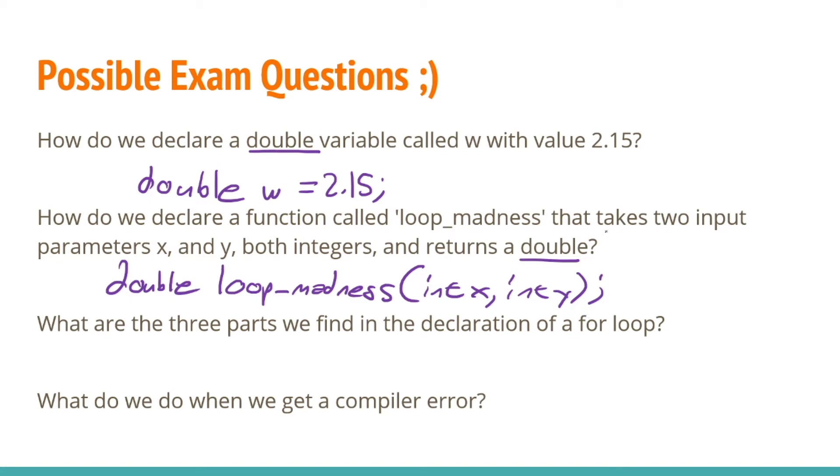Notice that we didn't declare what happens in this function, because we don't need to care about that. We're only focusing on declaring the function, such that everyone knows these are the inputs, and it will give us a double. The inputs being two integers, x and y, and it will give us a double.